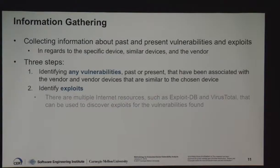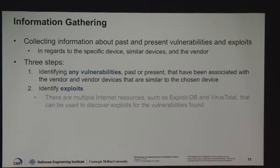Information gathering is just background research about the device — collecting anything we can about past or present vulnerabilities in that device, in similar devices from the same manufacturer, and similar devices across manufacturers. We identified any vulnerability, past or present, associated with that vendor and their similar devices, then identified and marked any exploits to later test on the device in question.